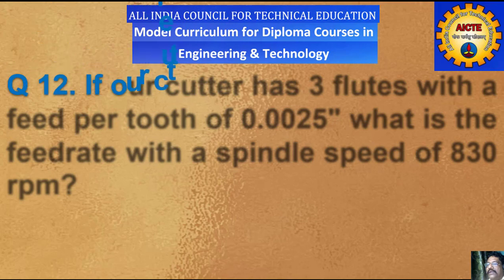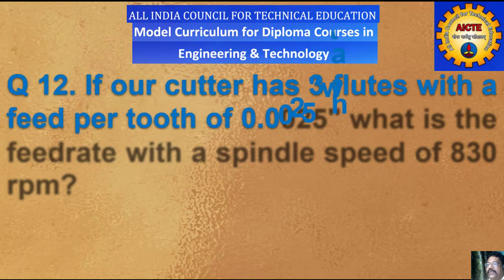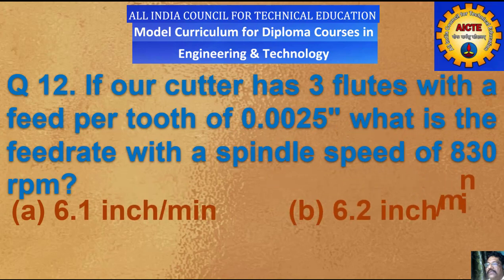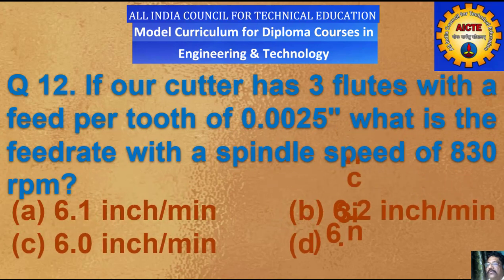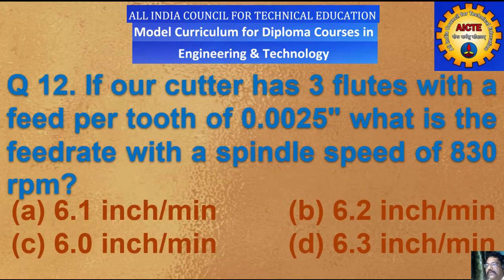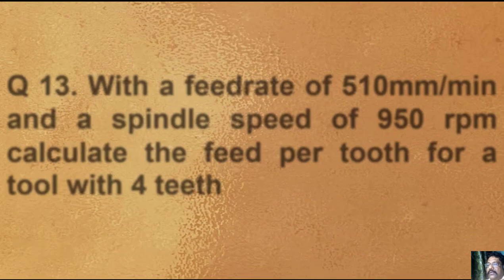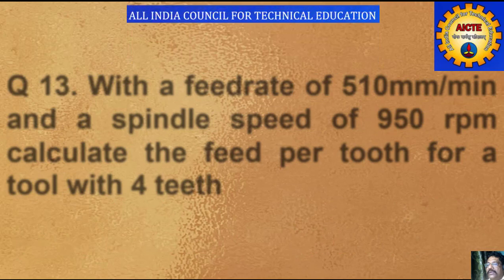Question number 12: if our cutter has 3 flutes with a feed per tooth of 0.0025 inch, what is the feed rate with a spindle speed of 830 rpm? A) 6.1 inch per minute, B) 6.2 inch per minute, C) 6.0 inch per minute, D) 6.3 inch per minute.